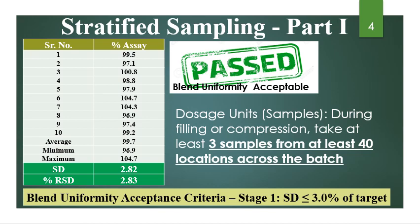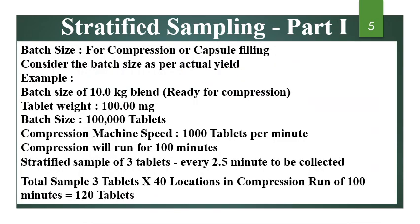Dosage unit samples are taken during filling or compression. Take at least 3 samples from at least 40 locations across the batch. Now you have 10 assay values in hand, blend uniformity results are acceptable, passing with standard deviation less than 3%. We now have to divide the entire compression or capsule filling run into 40 locations as per the guideline. The blend uniformity is passing and you have the lubricated blend in hand, ready for compression.